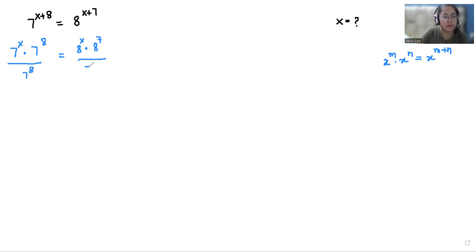If I divide both sides by 7^8, we can eliminate this. And if I divide both sides by 8^x, we can eliminate that. So what is left is 7^x / 8^x = 8^7 / 7^8.